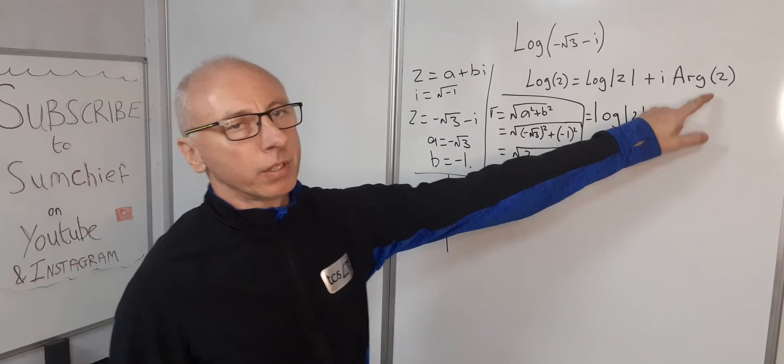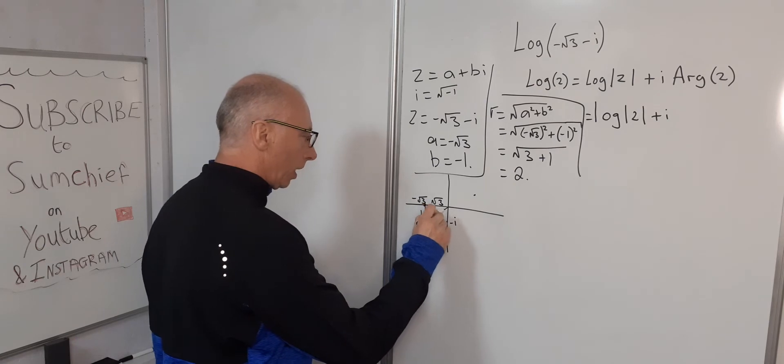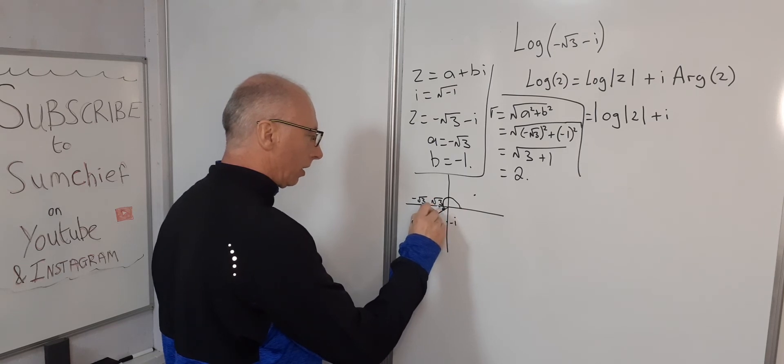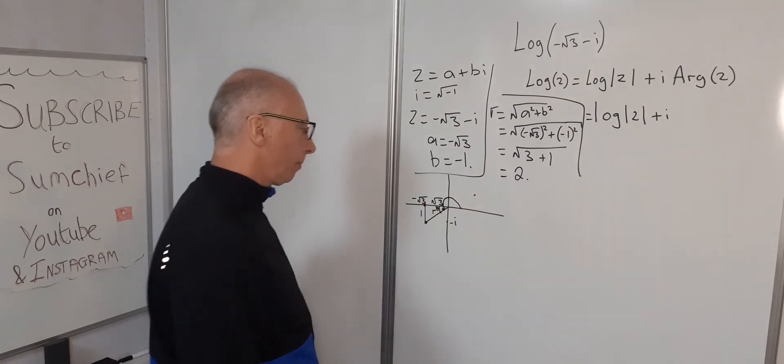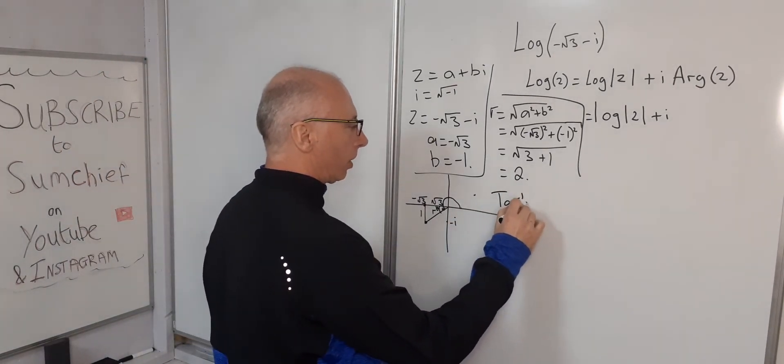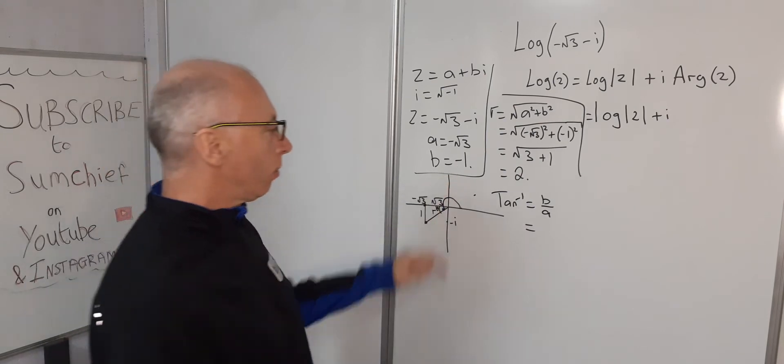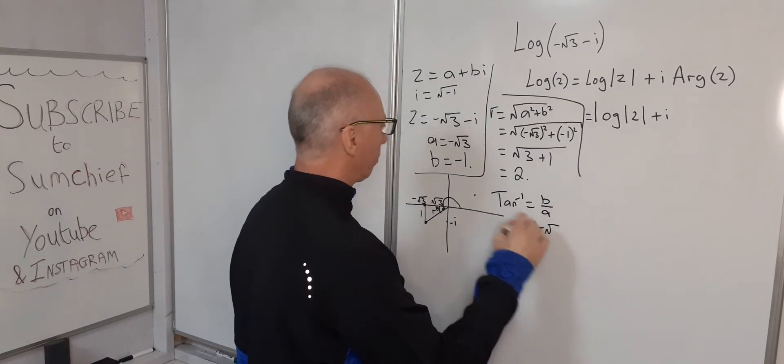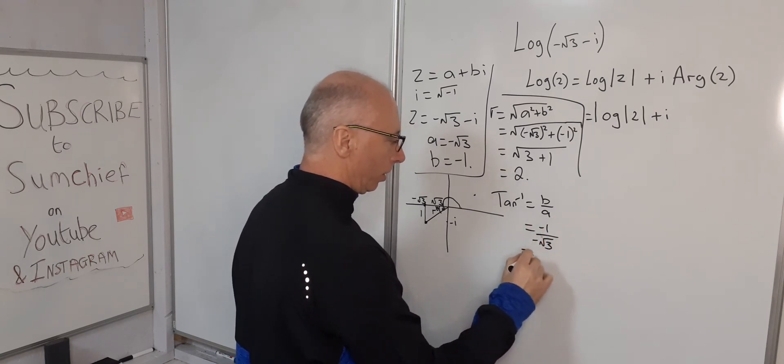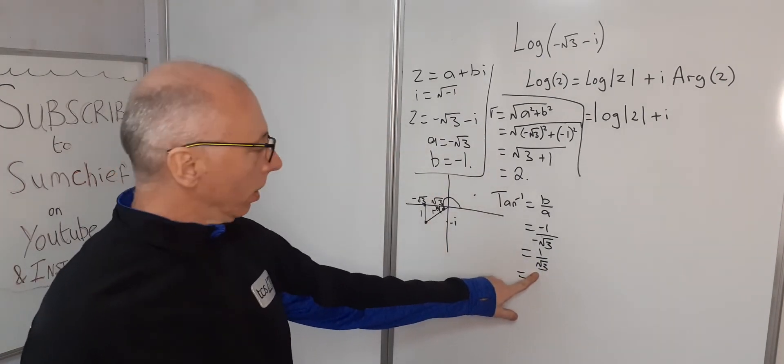Now we need to work out the argument of our question here. So what is the angle here? This is what we need. We need to go all the way from the positive real axis all the way to here. So we can work out this angle here, that's not a problem, by using SOHCAHTOA. So inverse tangent equals b over a. So it equals negative root 3 over negative 1. Sorry, negative 1 over negative root 3. Get that the right way around. Negative root 3, which equals 1 over root 3. And 1 over root 3 inverse tangent is pi over 6.